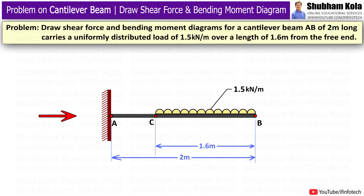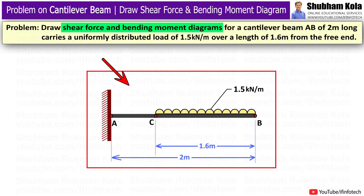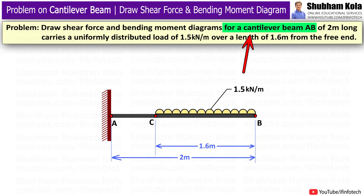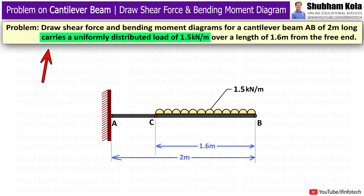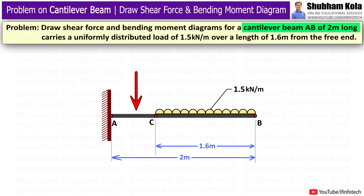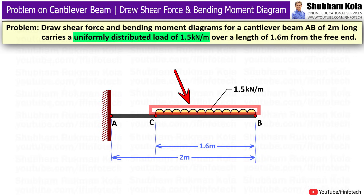In this video, we are going to learn how to draw shear force and bending moment diagram for a cantilever beam as shown in figure. The statement is: draw shear force and bending moment diagram for a cantilever beam AB, 2 meters long, which carries a uniformly distributed load of 1.5 kN per meter over a length of 1.6 meters from the free end.